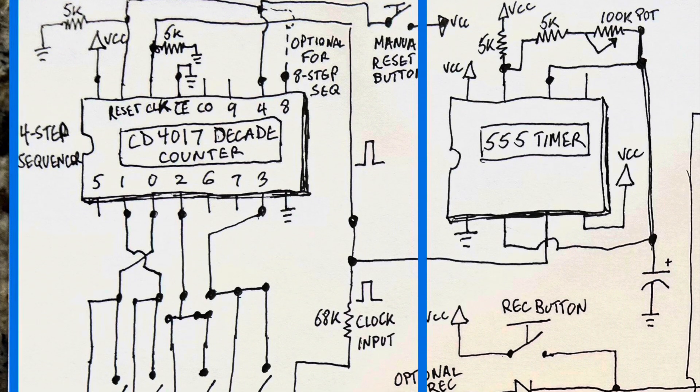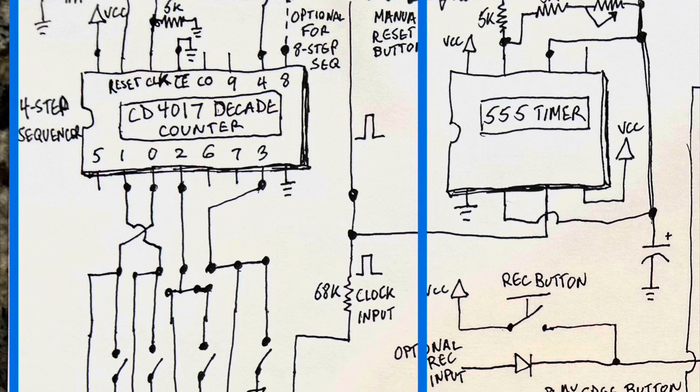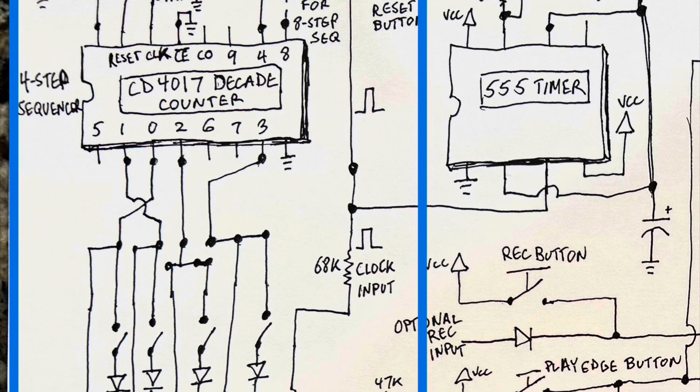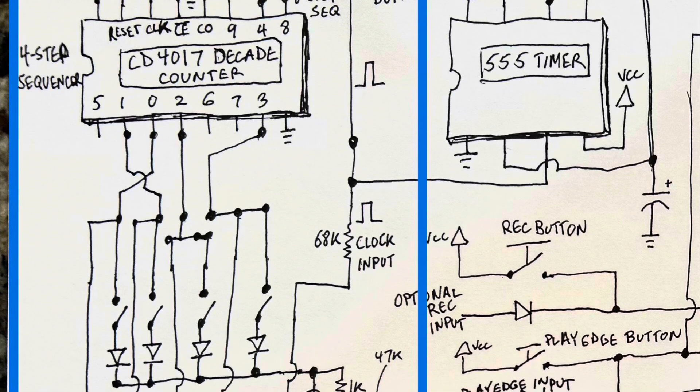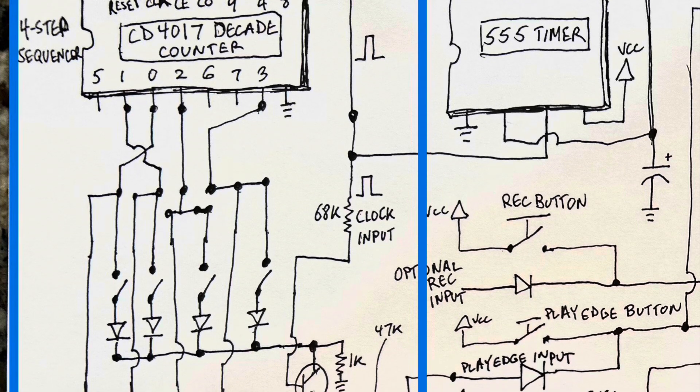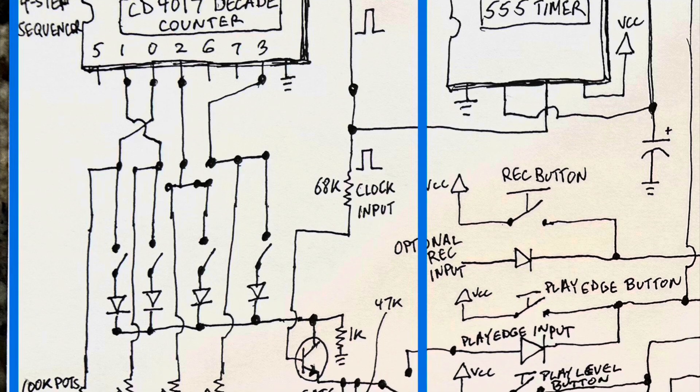I built a four step sequencer for this circuit. This is based on a CD4017 decade counter, which is controlled by a clock signal. And basically I've discussed this thoroughly in a whole separate video about making a sequencer, but I have the output pins on the CD4017, 0, 1, 2, and 3,